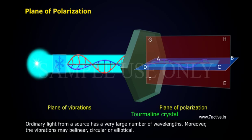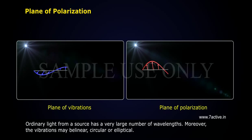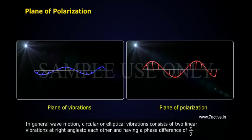Ordinary light from a source has a very large number of wavelengths. Moreover, the vibrations may be linear, circular, or elliptical. In general wave motion, circular or elliptical vibrations consist of two linear vibrations at right angles to each other and having a phase difference of pi by two.